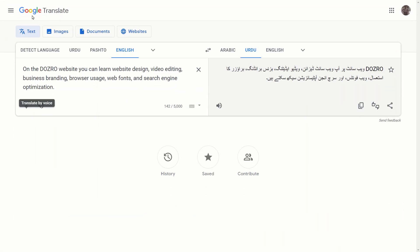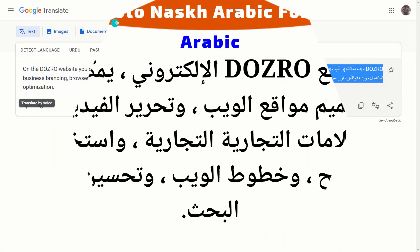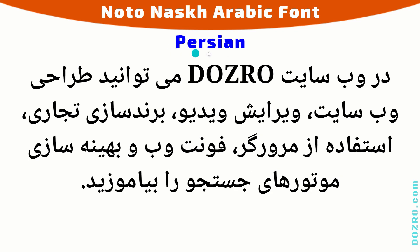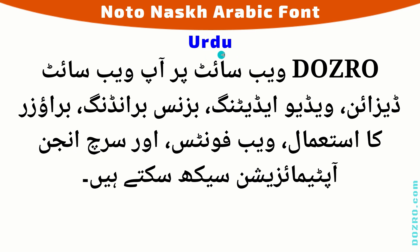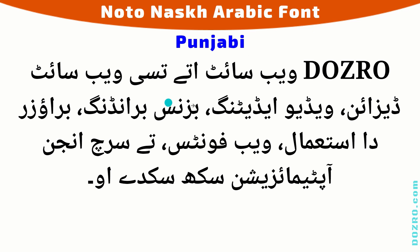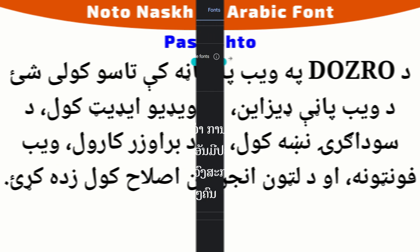I have copied the text in each language from Google Translate, and here you can see the demonstration. This is Arabic text using the same font. This is Persian text using Noto Nusk Arabic font. This is Urdu text. This is Sindhi text using Noto Nusk Arabic font. This is Punjabi text. And this is Pashto text using the same Noto Nusk Arabic font.